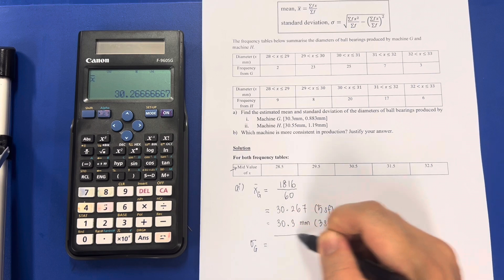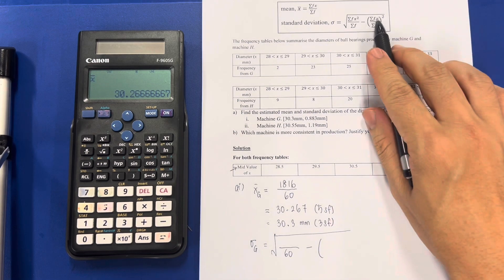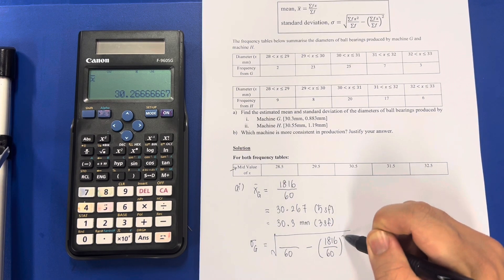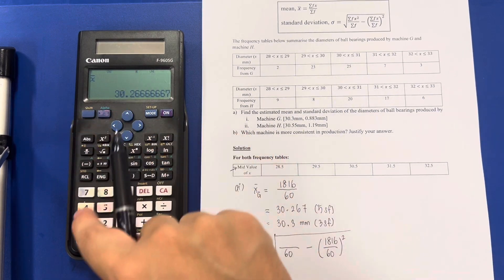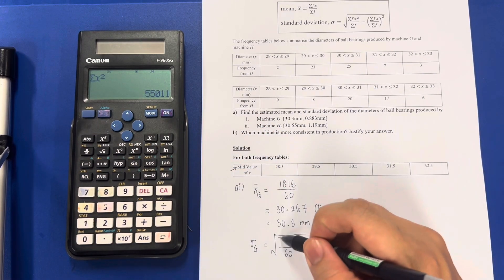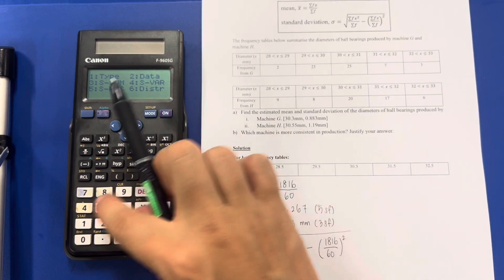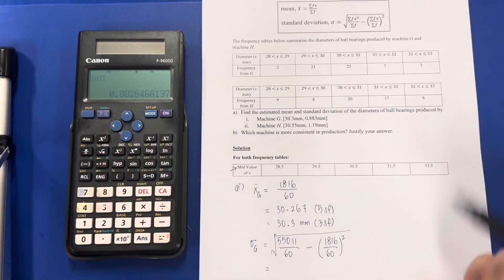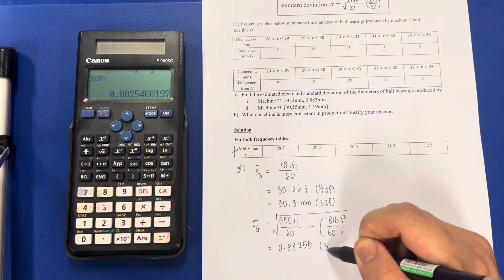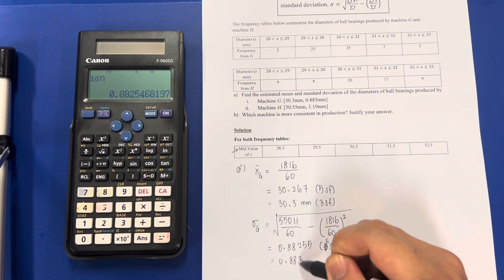Standard deviation for G will be the square root of summation x squared over 60, the summation f. Summation fx, summation f is the same, 1816. So I need to get this number now, summation. Shift 1, the sum, x-way: 55011. Shift 1, shift 1 again, this time round is the variance, 4 and 3: 0.88255. 5 significant figures, sorry, followed by 0.883 mm.